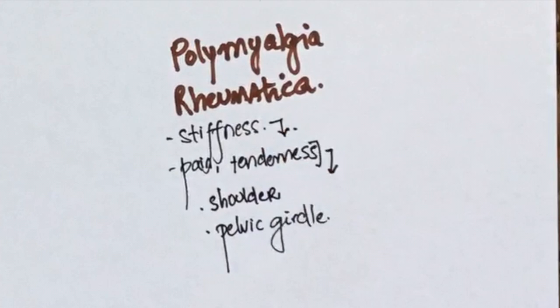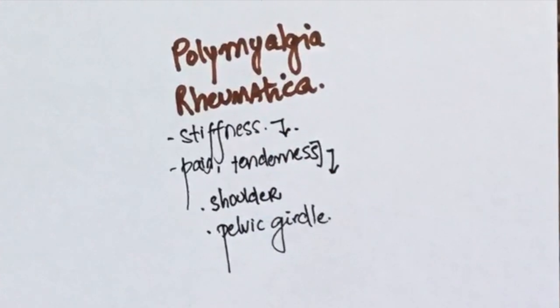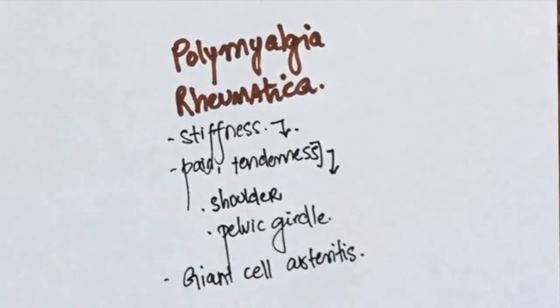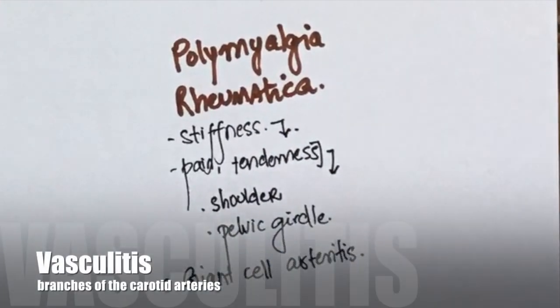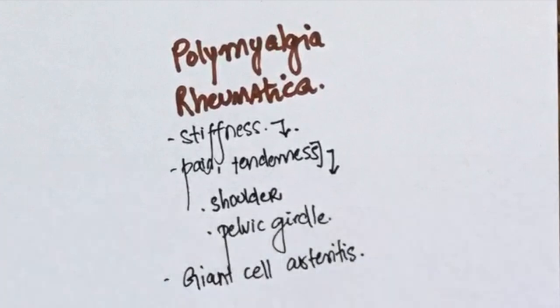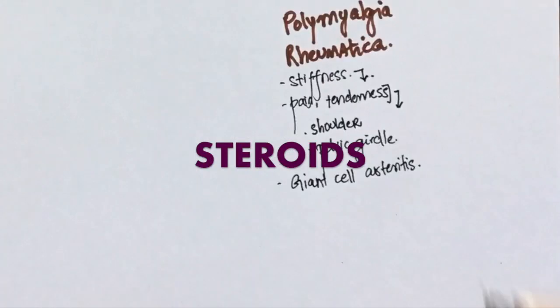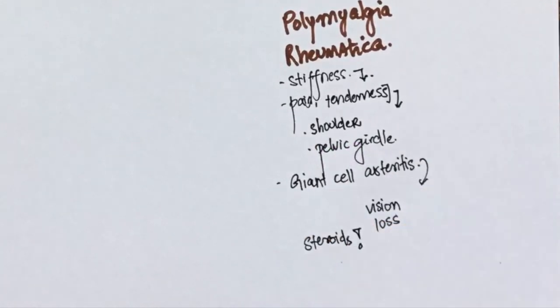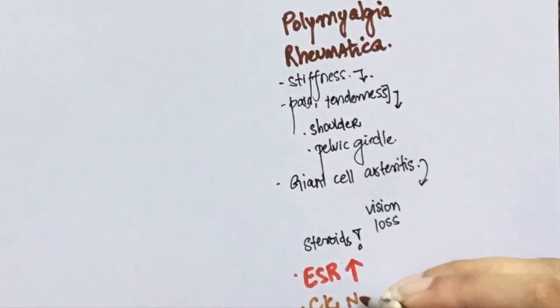The reason why our patient is experiencing headaches could be due to the fact that this condition is associated with giant cell arteritis. This is a kind of vasculitis that affects the branches of the carotid arteries. These patients should be given steroids immediately because if there's ophthalmic artery involvement it can lead to blindness.